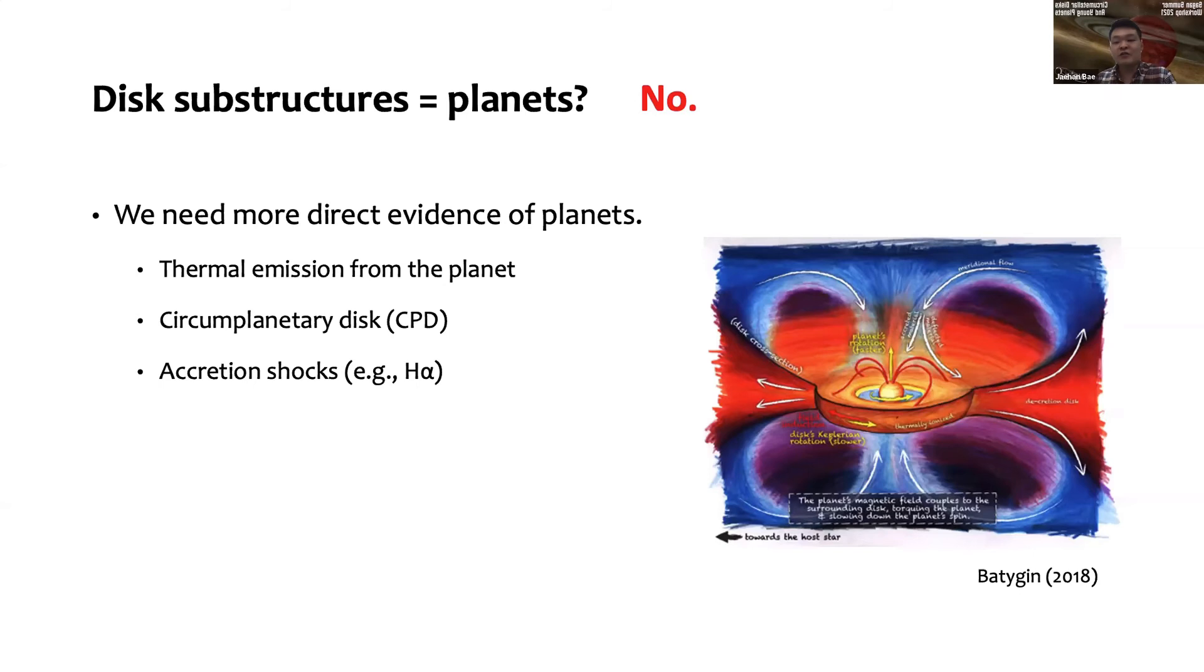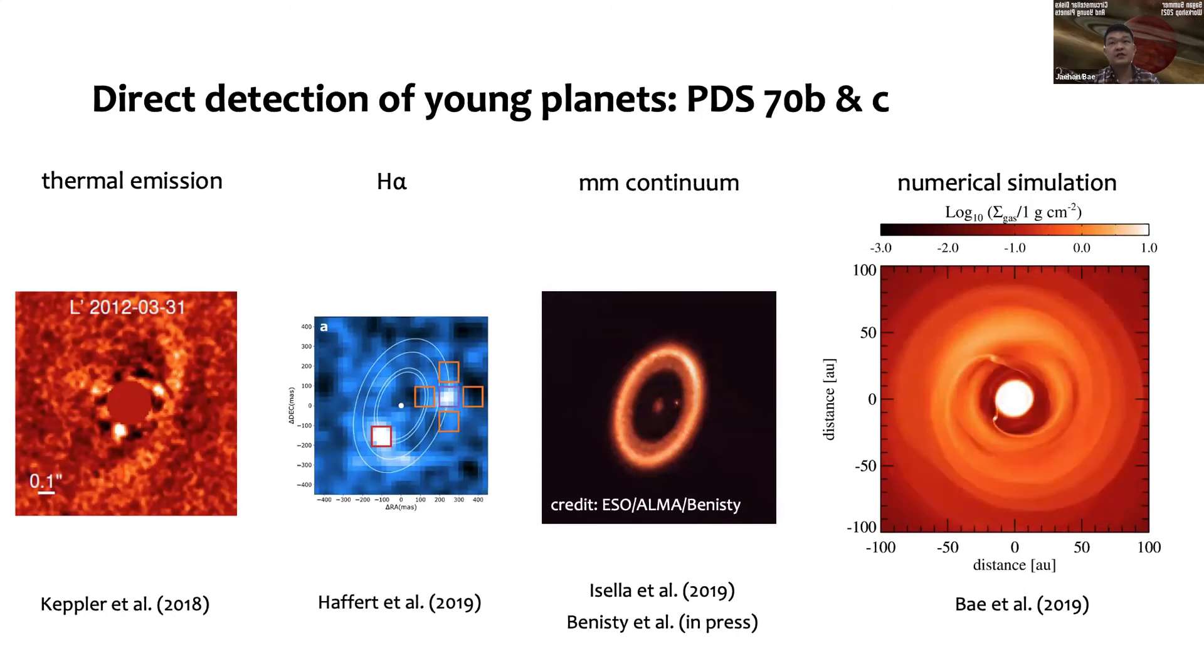What should we do? It might be a disappointing answer if you were expecting me to tell you all the secrets of planet-disk interaction and how we can magically solve all the problems, but I'd argue that we really need more direct detections of those planets. Here are some examples: we can expect to see thermal emission coming from the planet, we can expect to detect circumplanetary disks, we can expect to detect H-alpha line emission or other accretion tracers as planets grow in mass.